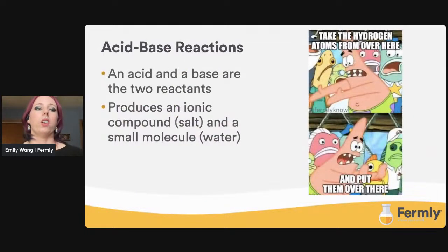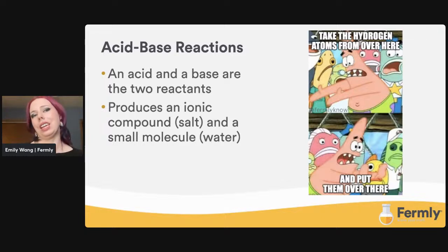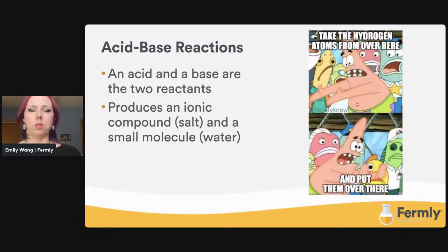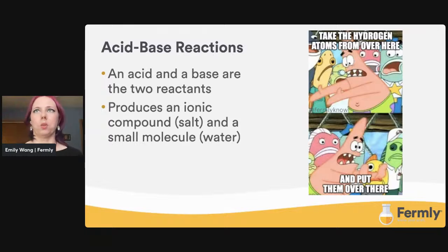Now we have acid-base reactions — taking what we just learned about pH and applying it to create reactions. These chemical reactions are a way of indicating an analyte of interest. One example is how you produce a salt and a small molecule — you basically take an acid and a base, put them together, and that's an acid-base reaction, which can vary depending on the pH of the water.